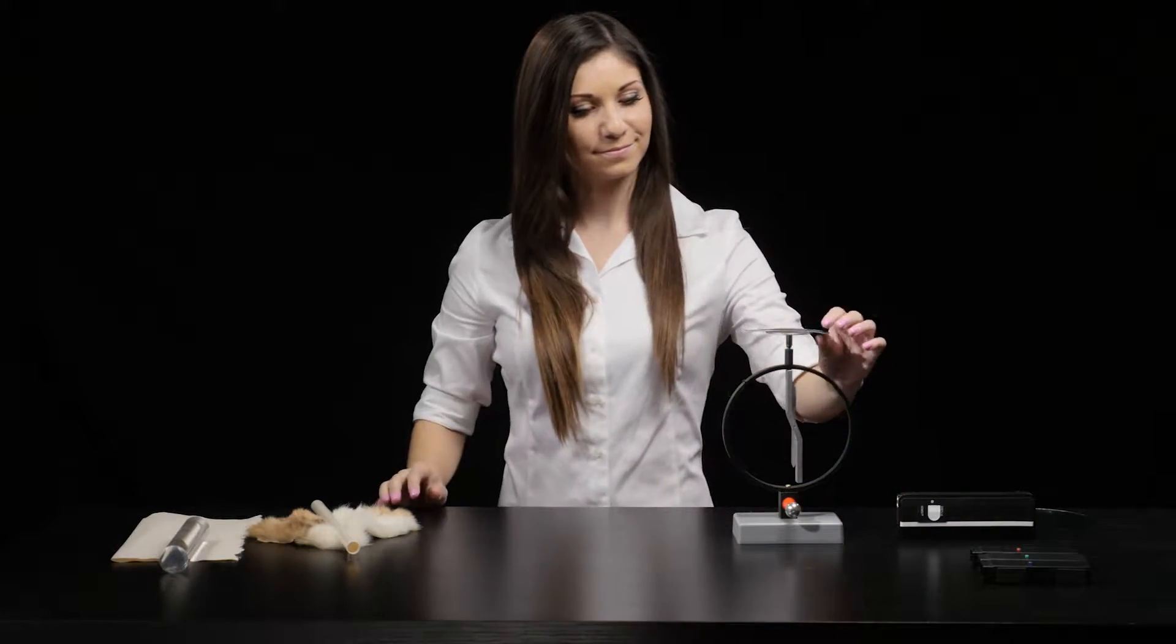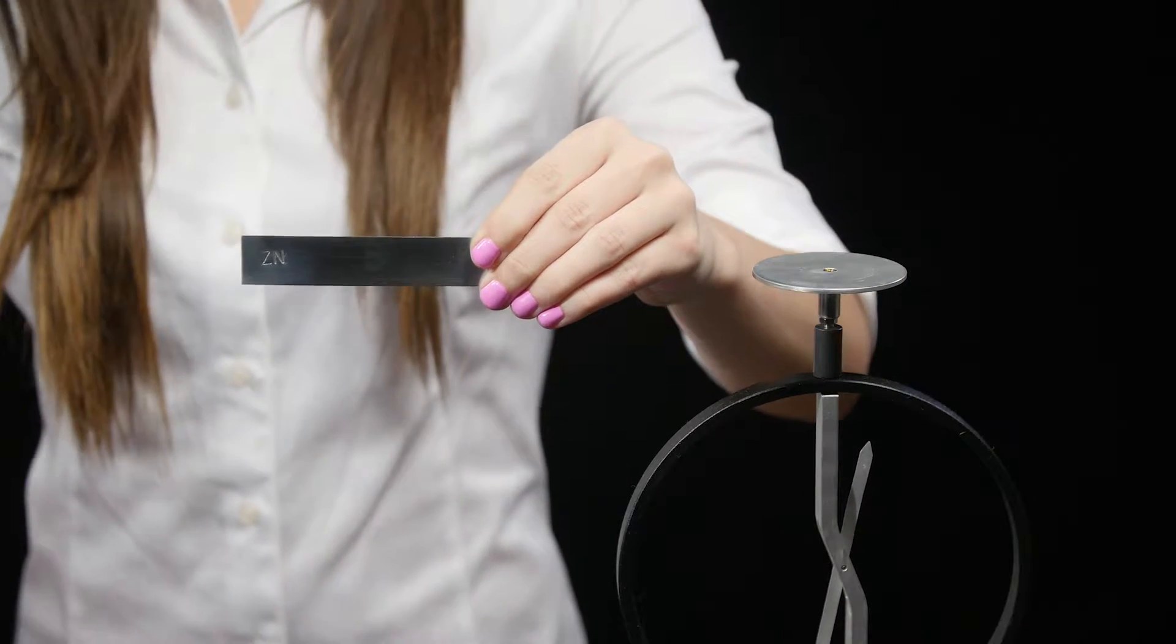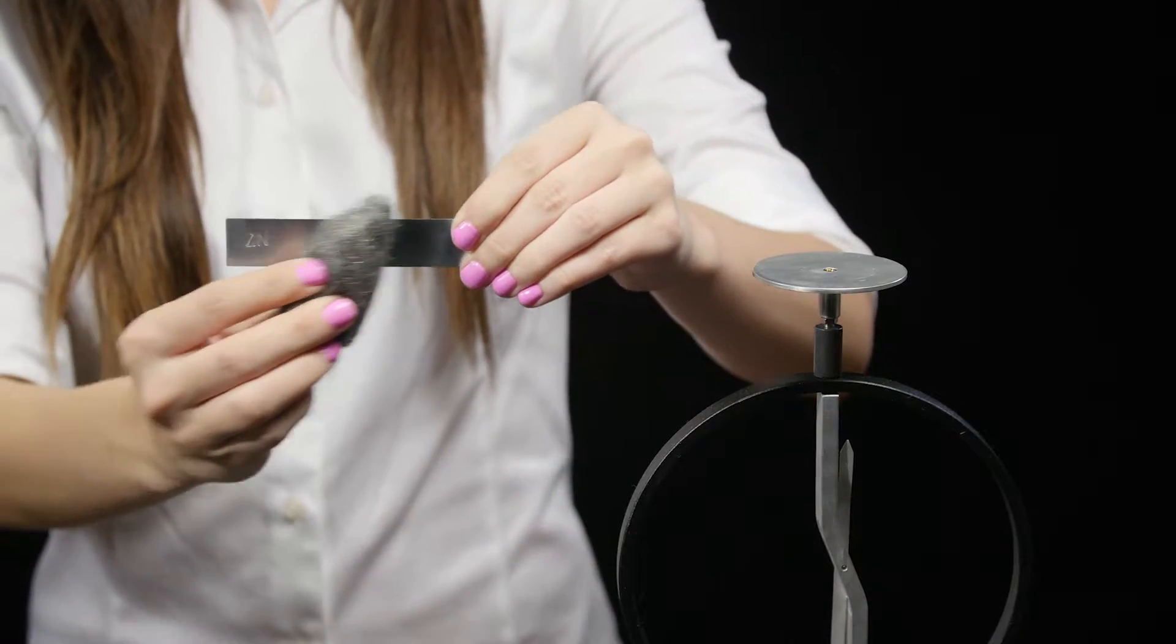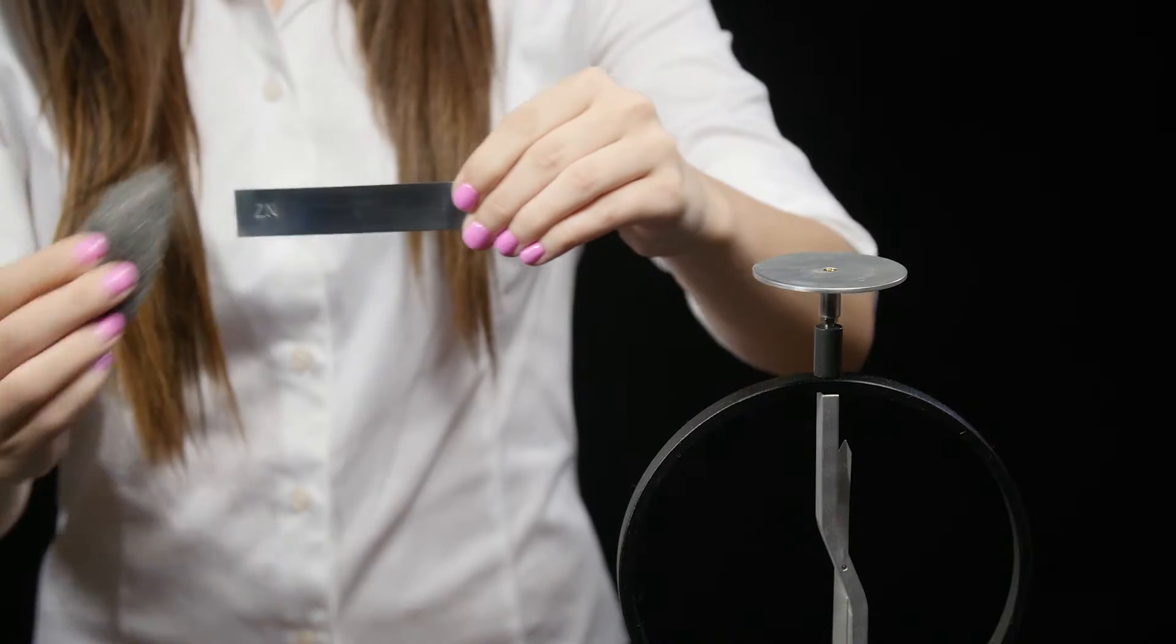The metal on top of the electroscope is a zinc plate. It is helpful to scrub the zinc with steel wool to remove the oxide layer.